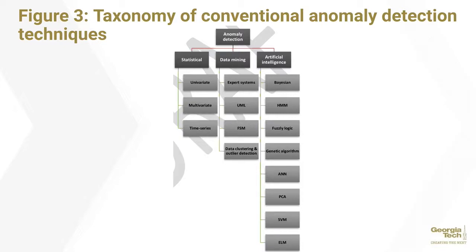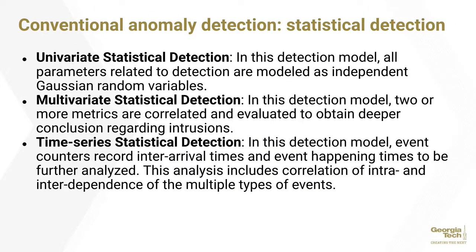The statistical detection models use three broad approaches: univariate statistical detection, in which all parameters related to detection are modeled as independent Gaussian random variables; multivariate statistical detection, where two or more metrics are correlated and evaluated to obtain conclusions about intrusions; and time series statistical detection, where event counters record inter-arrival times and event happenings to be further analyzed, which can look across multiple types of events.